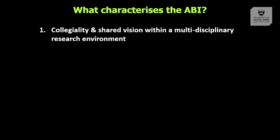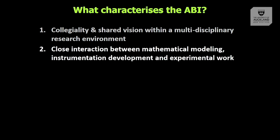What characterises the ABI? We have a very collegial shared vision within a multidisciplinary research environment, with close interaction between modelling, instrumentation development, and experimental work — and we never want to lose those three pillars. You need new instruments to make new measurements; most new discoveries come because someone thought of a new way of measuring something. But because biology is complex, you also need modelling to interpret complex data. It's the interaction between those three that is really the characteristic of the ABI.